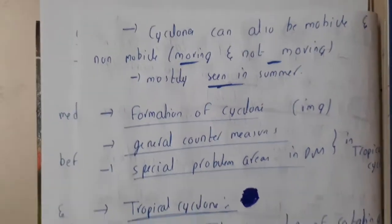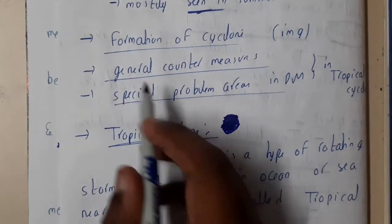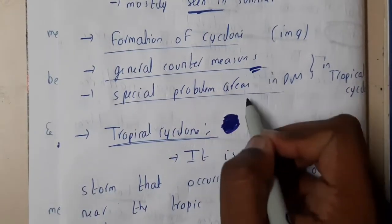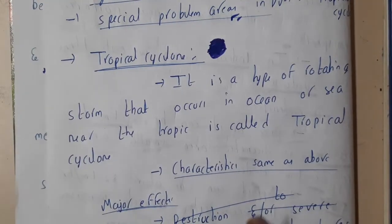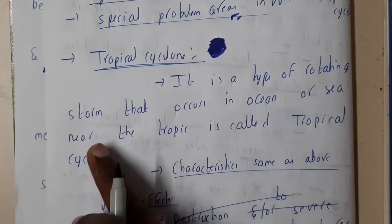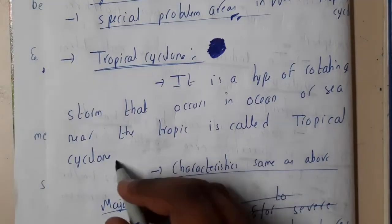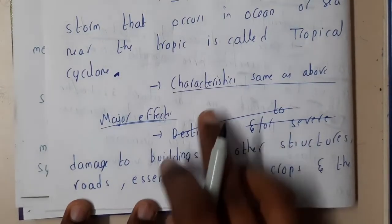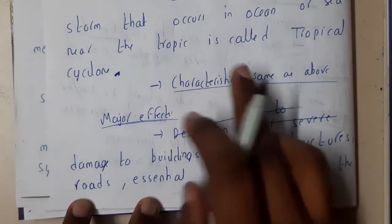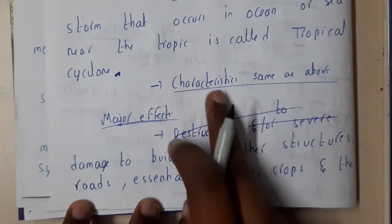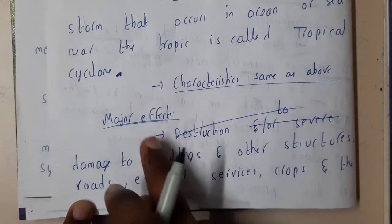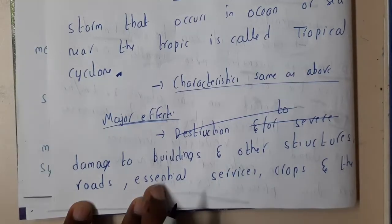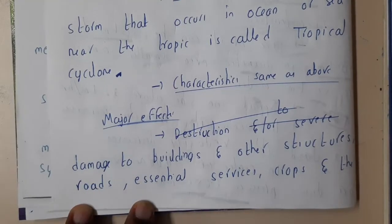The next topics are the common countermeasures and problems, which we will discuss under tropical cyclone. The definition of tropical cyclone is a type of rotating storm that occurs in the ocean or sea near the tropic. The characteristics — speed, velocity, radius, and diameter — are all the same as a normal cyclone.